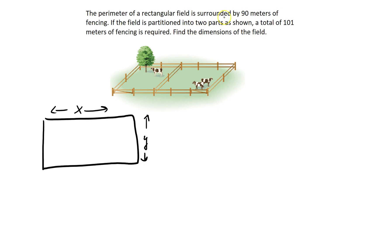And from the first part of the problem, we see that the rectangular field is surrounded by 90 meters of fencing. So if you go all the way around, the perimeter of this rectangle is 2x plus 2y equals 90. We need 90 meters of fencing to completely go around this rectangular field.